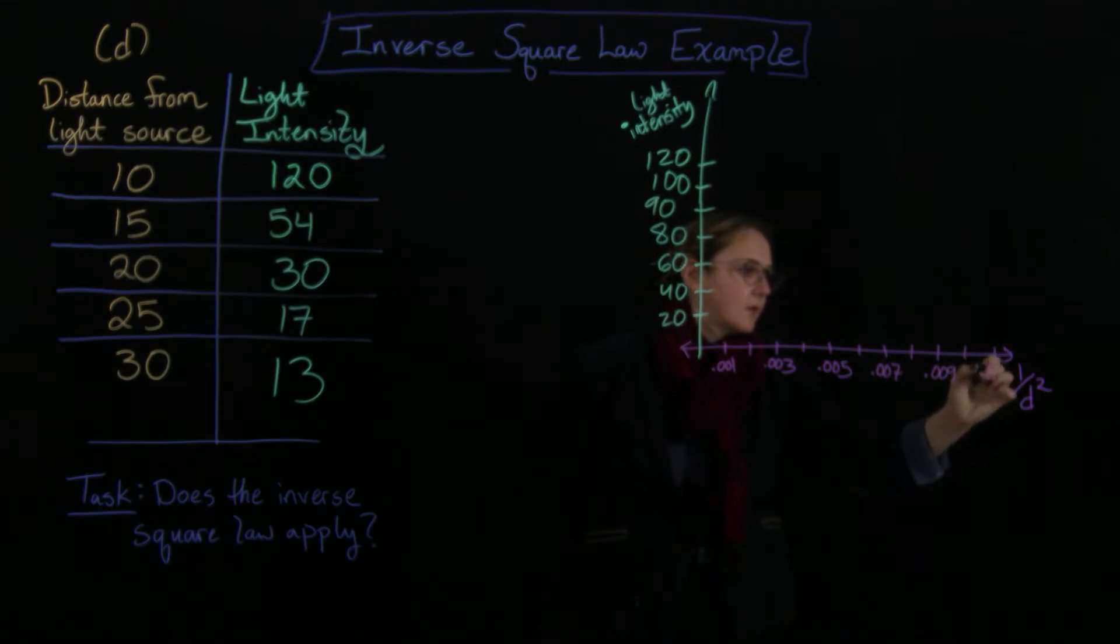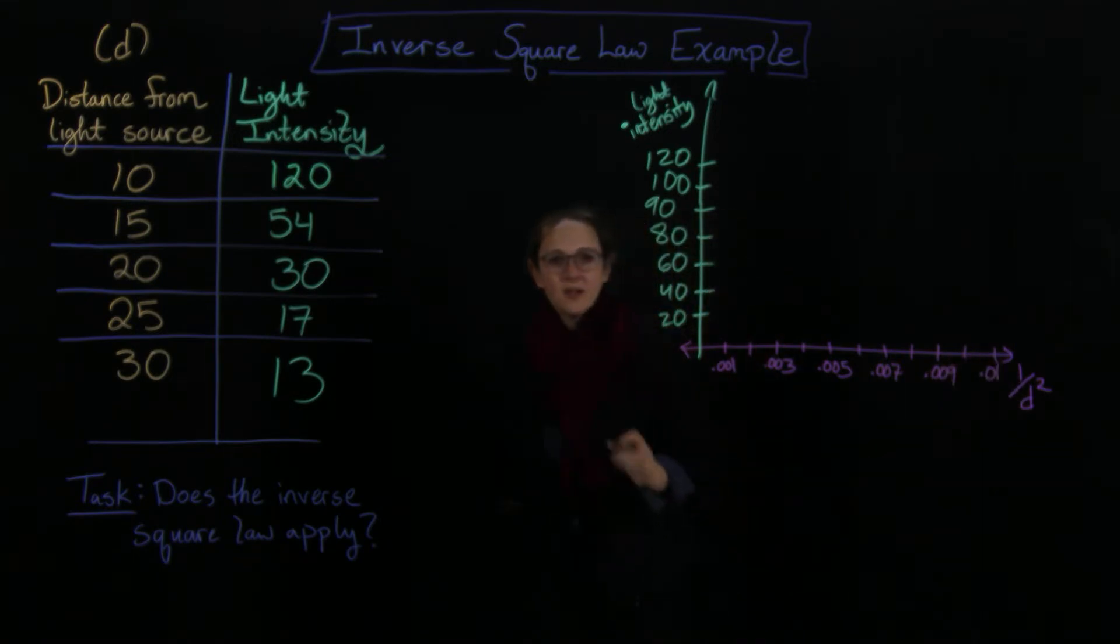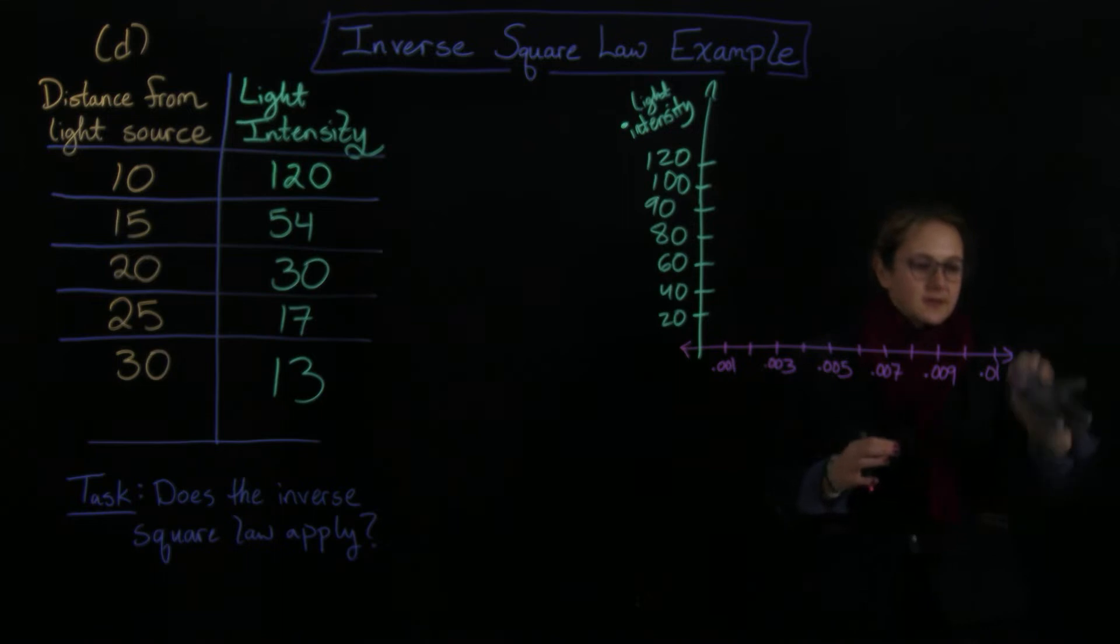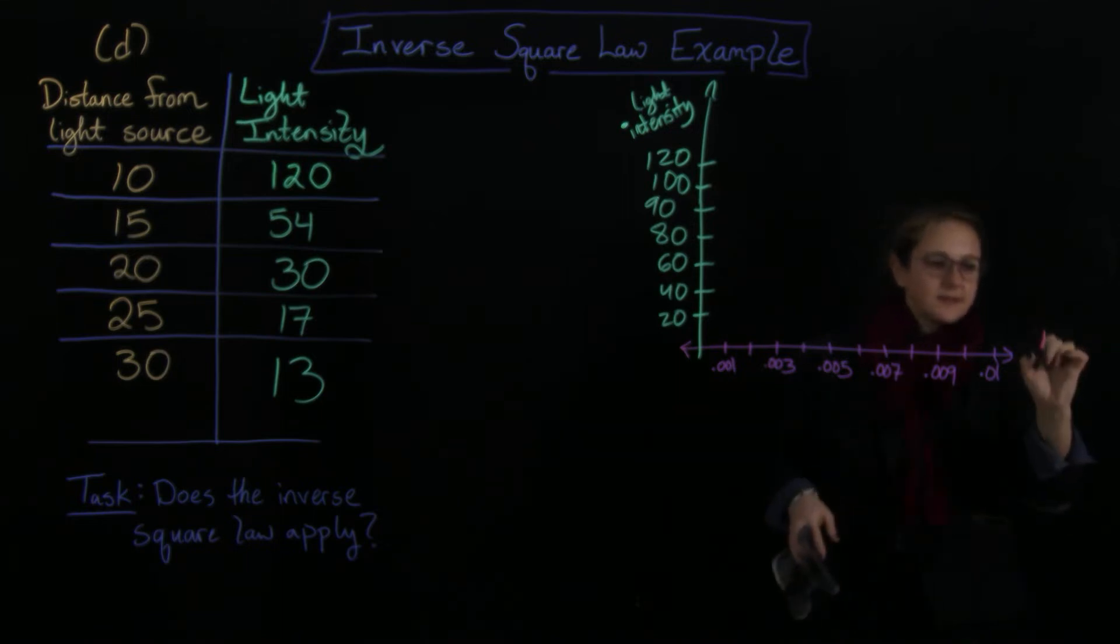And those would be values for one over d squared. I want to shift this just a little bit so that you can see very clearly that this axis is my one over d squared axis.